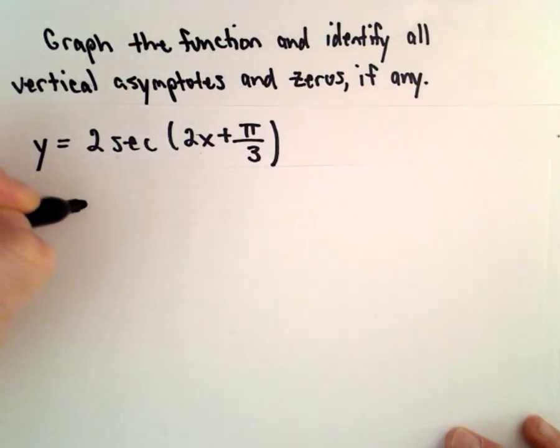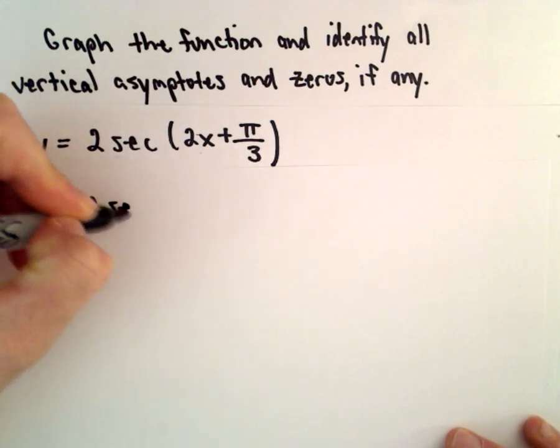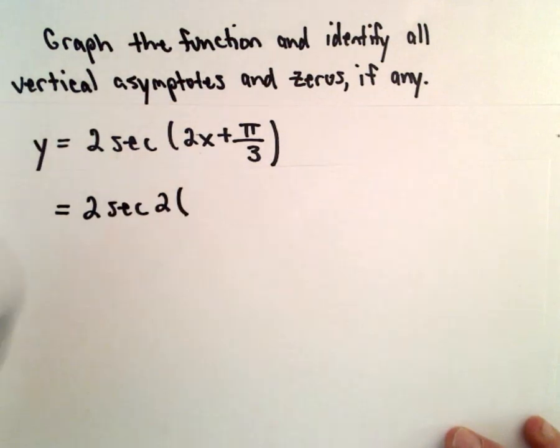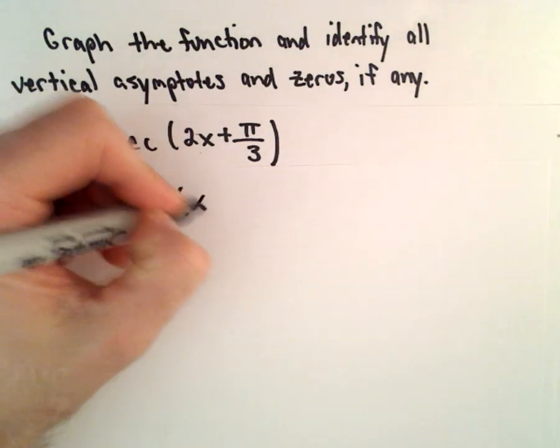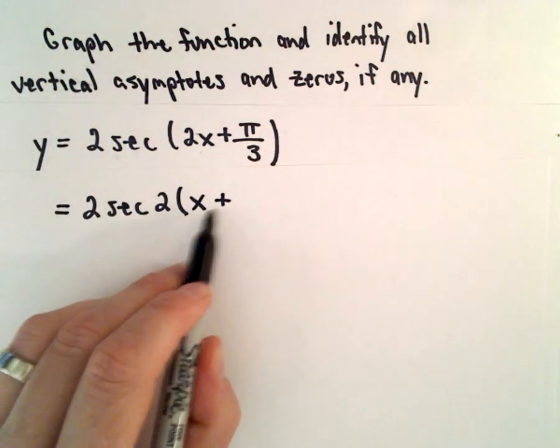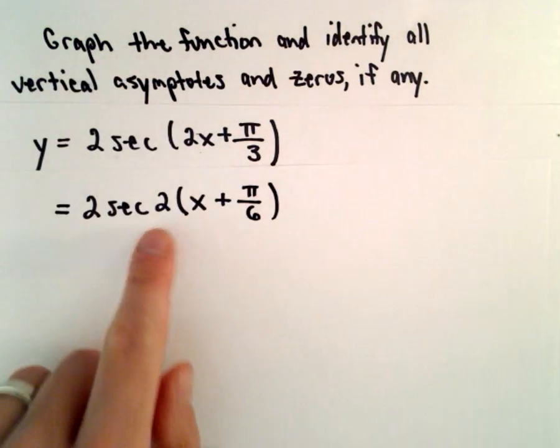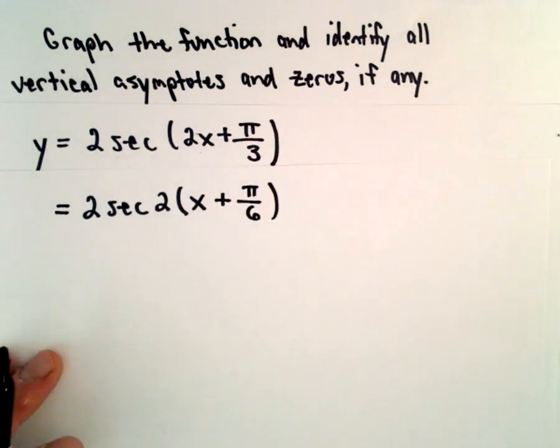The first thing I'm going to do is rewrite this. I want the coefficient on the x in the parentheses to be equal to 1, so we have to factor out its coefficient. So if we pull the 2 out, we'll have x plus pi over 6. 2 times pi over 6 would give us pi over 3.